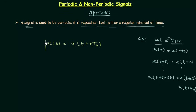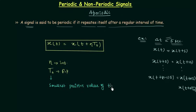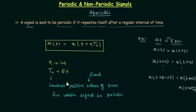In case of periodic signals, x(t) = x(t + n·T0), where n is an integer and T0 is the fundamental period. The fundamental period is the smallest positive value of time for which the signal is periodic. This is the definition of fundamental period T0.